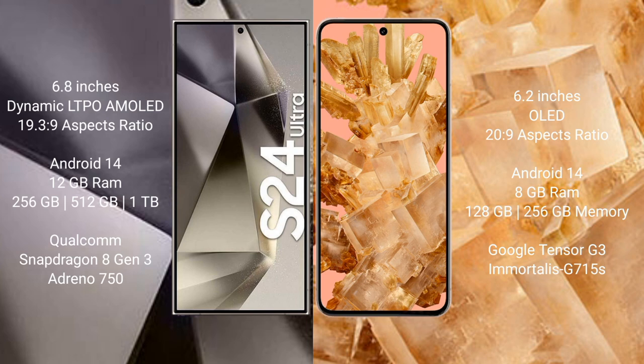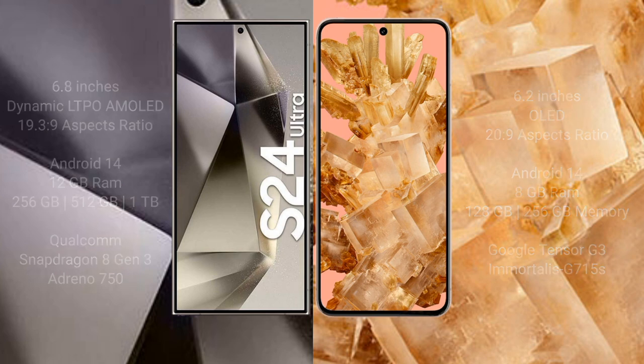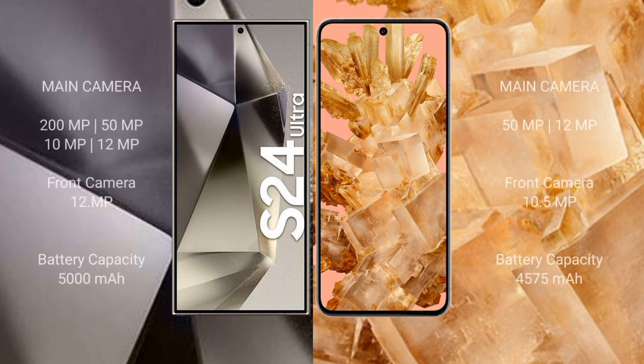The Samsung Galaxy S24 Ultra comes with 12GB RAM and 256GB, 512GB, or 1TB internal storage, powered by the Qualcomm Snapdragon 8 Gen 3 processor with GPU Adreno 750. The Google Pixel 8 comes with 8GB RAM and 128GB or 256GB internal storage, with a Google Tensor G3 processor and GPU 715s.